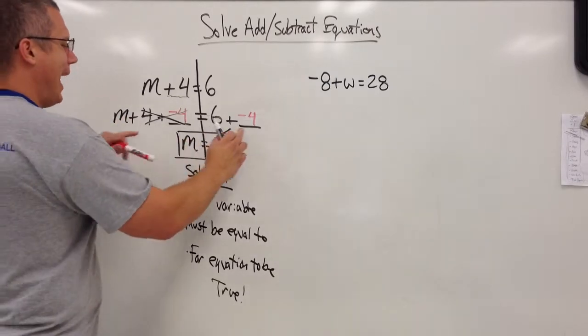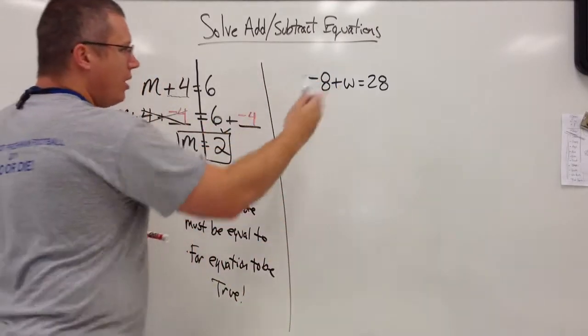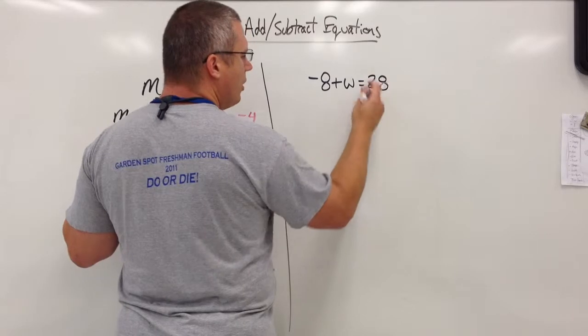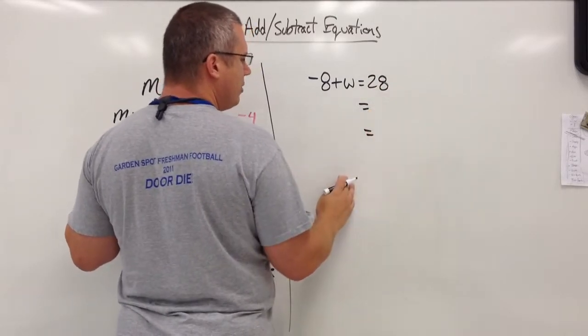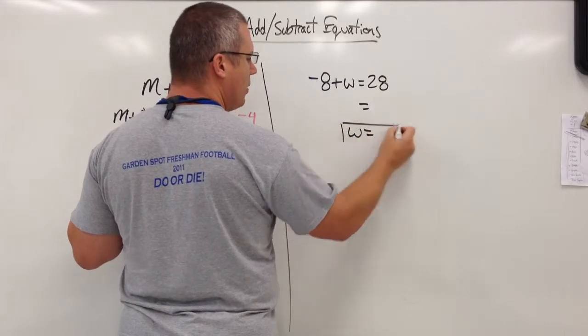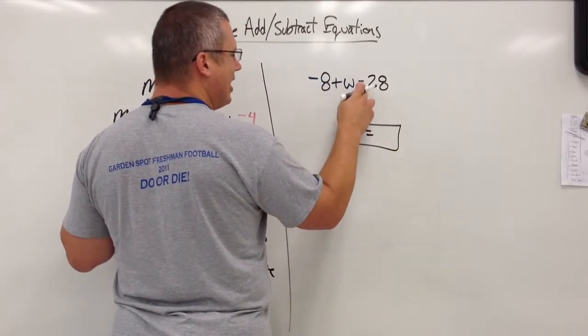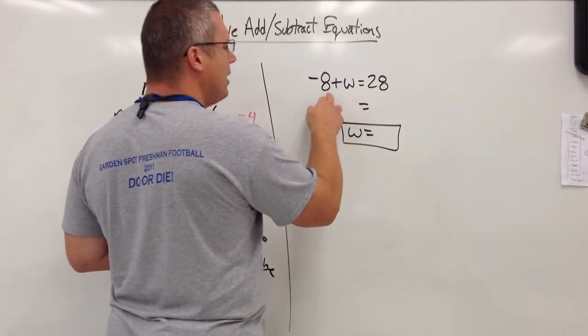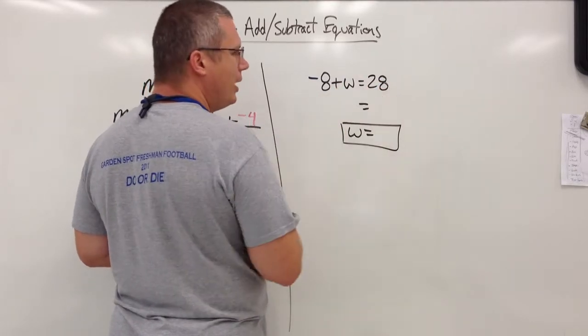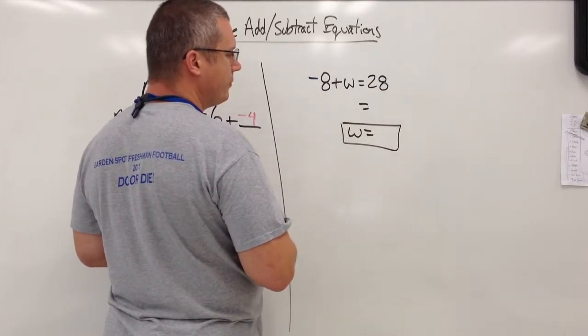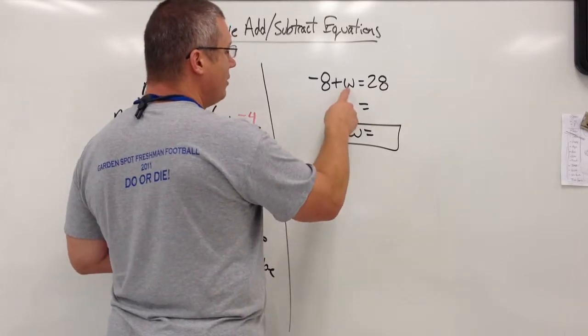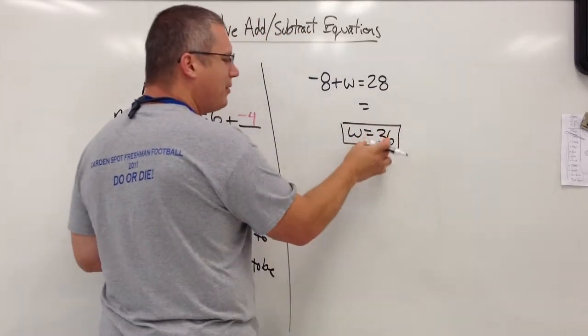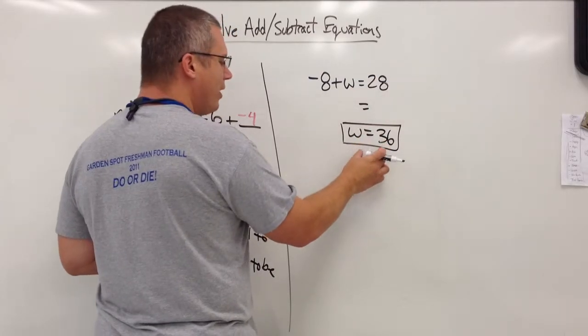Let's go to the next set up. This says negative 8 plus W equals 28. I'm going to add a line for my work and a line for my solution. Do you know ahead of time what W is? Negative 8 plus what magic number equals 28? 20? Let's see. 20 plus negative 8 is 12. 12 is not equal to 28. So I've got to think of something else. 36? 36 plus negative 8 hopefully is 28. You don't have to come up with this. I'm just showing you. Some people will figure this out first.